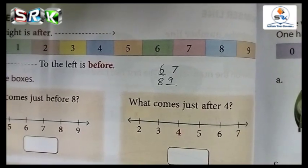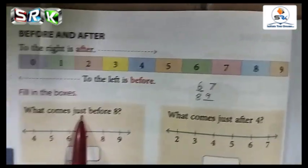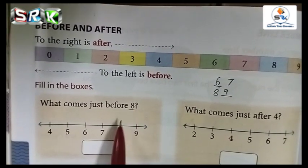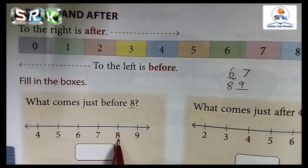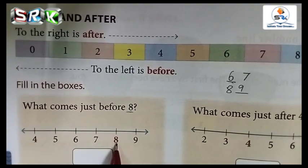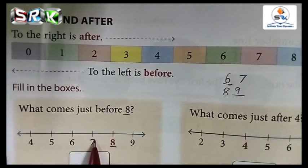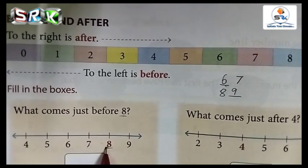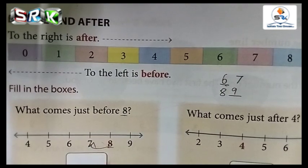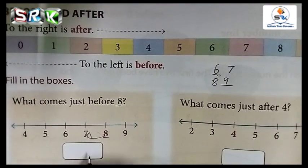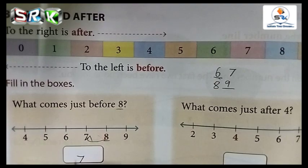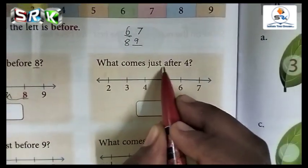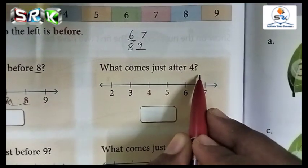See the first one: what comes just before 8? The number given here is 8. See the number line — eight before number, as I already told you, is seven. So all of you write 7 in the box neatly.